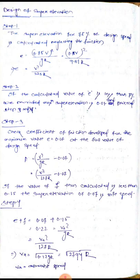Today we start the design of super elevation. There are four steps to design super elevation. Step one: the super elevation for 75 percent of design speed is calculated, neglecting the friction. If the design speed is greater than 75, we design neglecting the friction — we call it neglecting friction. That is, e plus f formula is used.